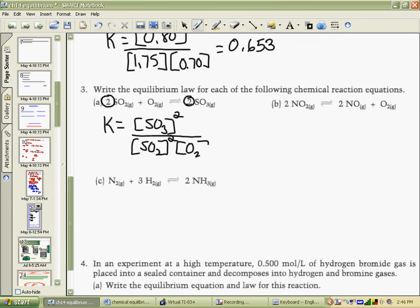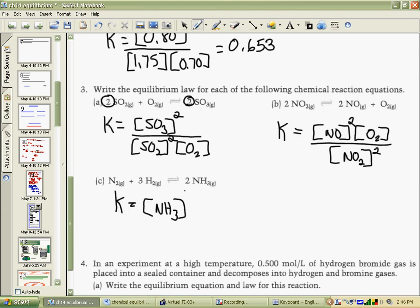For part B, you take your products, nitrogen monoxide squared, concentration of oxygen, divided by concentration of nitrogen dioxide squared. Thirdly, we have concentration of NH3 squared over concentration of the nitrogen and concentration of hydrogen cubed. Oops, hydrogen gas cubed. That would be that third expression.